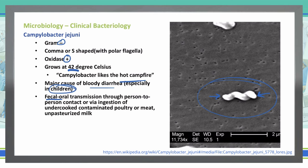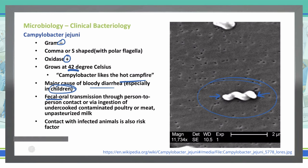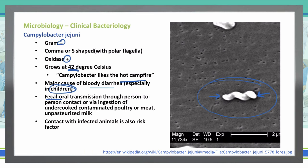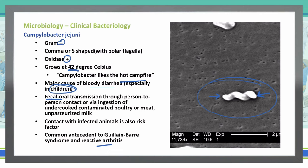If milk is unpasteurized, that's how it can be transmitted. You can also have transmission from contact with an infected animal — not just through a fecal-oral route. If there is contact with an animal that has fecal contents present on the skin, that can get into your body. Campylobacter jejuni is also associated with a potential onset of Guillain-Barré syndrome, as well as reactive arthritis — important things to note in a clinical presentation.